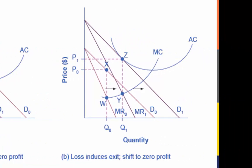In the graph on the right, the opposite occurs. At P0 and Q0, the firm is losing money. If you follow the dotted line above Q0, you can see that average cost is above the price. Losses induce firms to leave the industry. When they do, demand for the original firm rises to D1, where once again, the firm is earning zero economic profit.